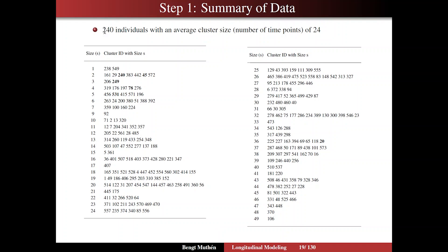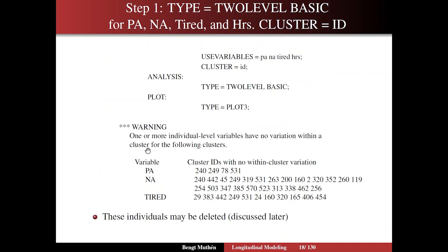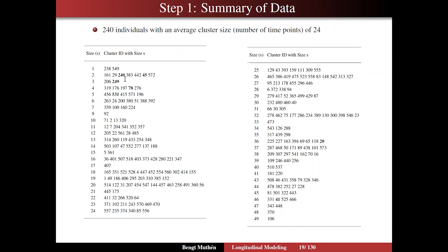Here's a summary of the data printed in the output. We have 240 individuals, and we have the cluster IDs ordered by size of the clusters — that is, in this case, how many time points they have. So 1 through 24, continuing 25 to 49, and the average seems to be around 24 time points. We recognize that the first positive affect cluster with no within-cluster variation was 240, which is bolded here. That person had only two time points for which they gave the same PA answer — a person you don't get much value from in terms of the overall analysis.